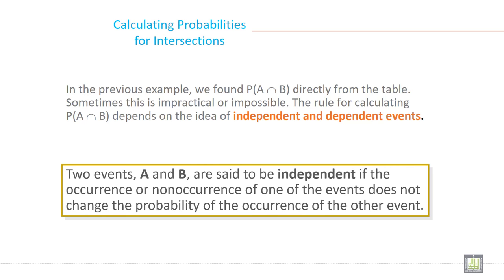Two events A and B are said to be independent if the occurrence or non-occurrence of one of the events does not change the probability of the occurrence of the other event.